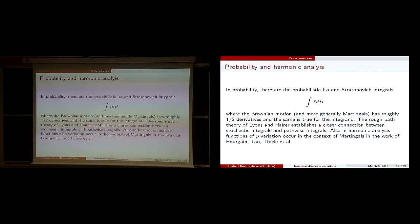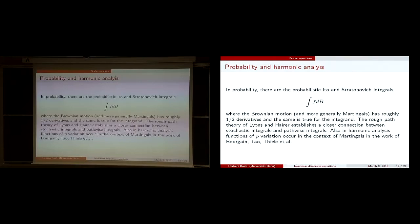These things occur in probability quite a bit — there are the probabilistic Itô and Stratonovich integrals. The integrand b is Brownian motion; Brownian motion roughly has half a derivative. So this is just on the borderline for this sort of integration with duality, which we know is not pathwise. The rough path theory of Terry Lyons is one of the places where V^p spaces — bounded p-variation — occurred a lot.